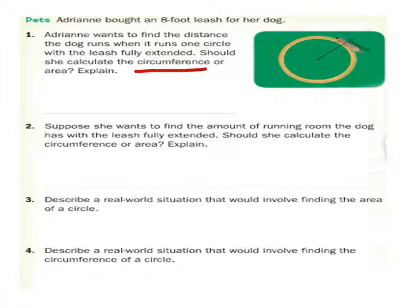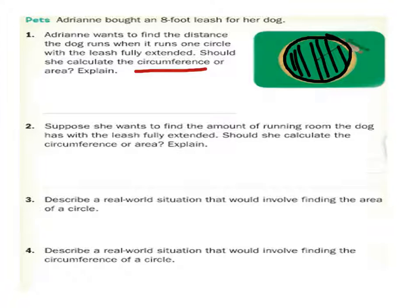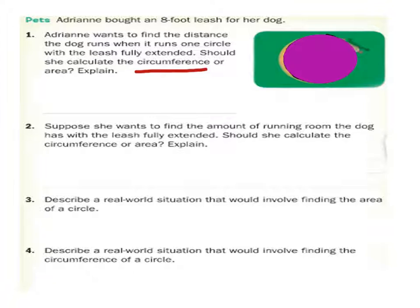Area is a form of measurement, but it covers a space. For example, we would want to know the area of this circle — how much space does this circle cover? But that's not really what we're looking for here. What we really want to know is how much distance is covered by the dog in this circle. So she definitely wants to find the circumference.